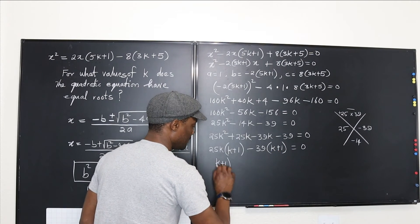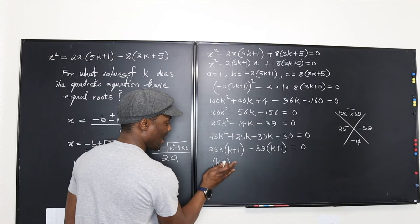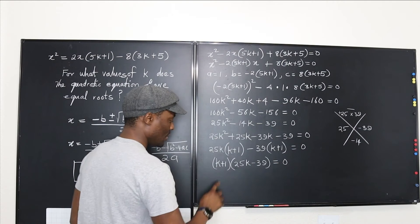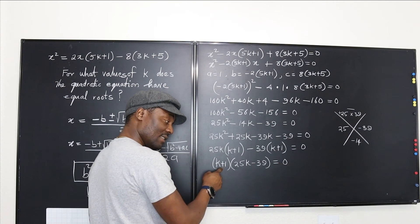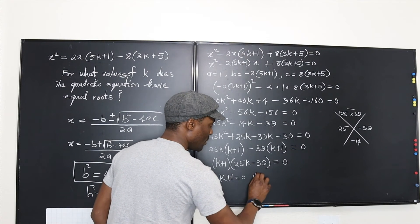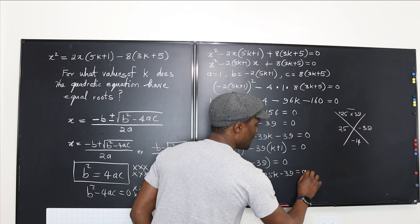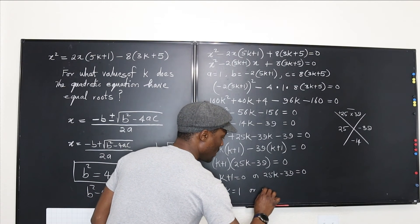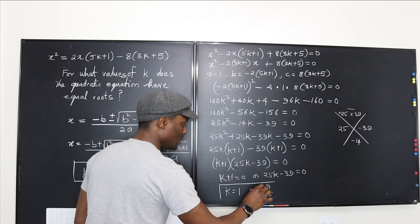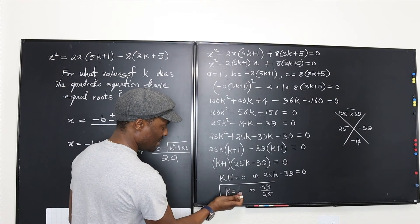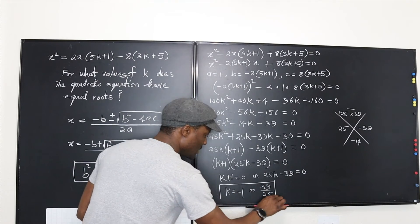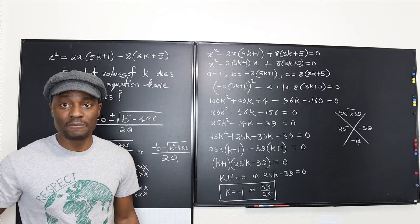So now we have (k + 1)(25k − 39) = 0. For you to get zero, either k + 1 = 0 or 25k − 39 = 0. So k = −1 or k = 39/25. Those are the two possible answers.